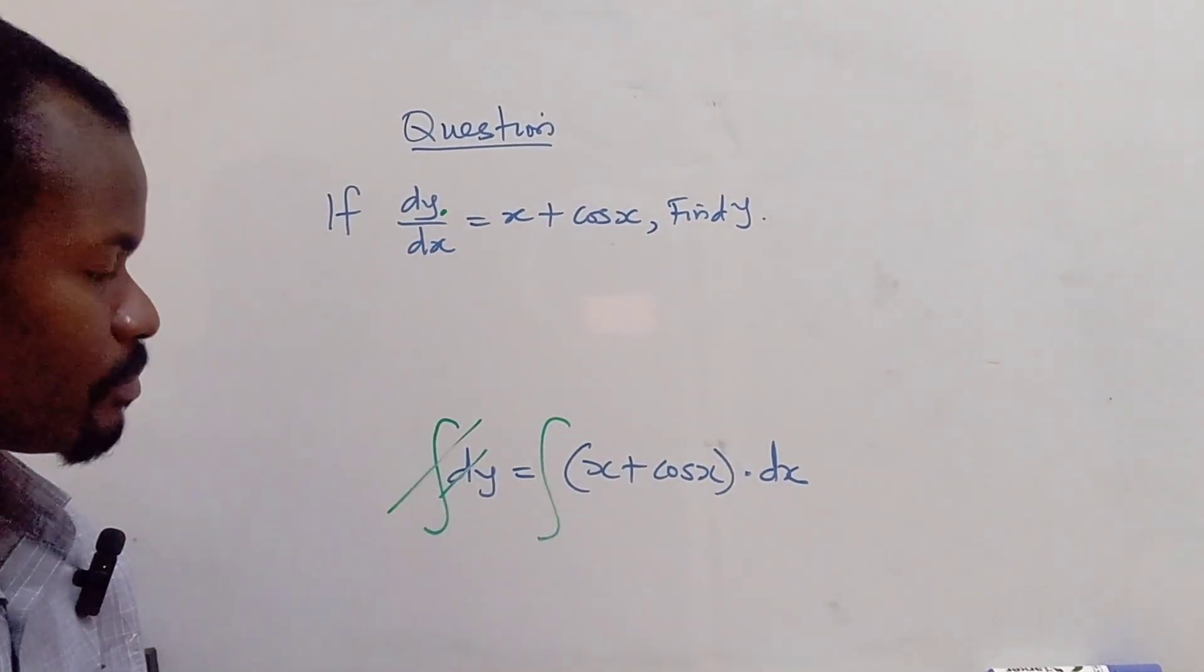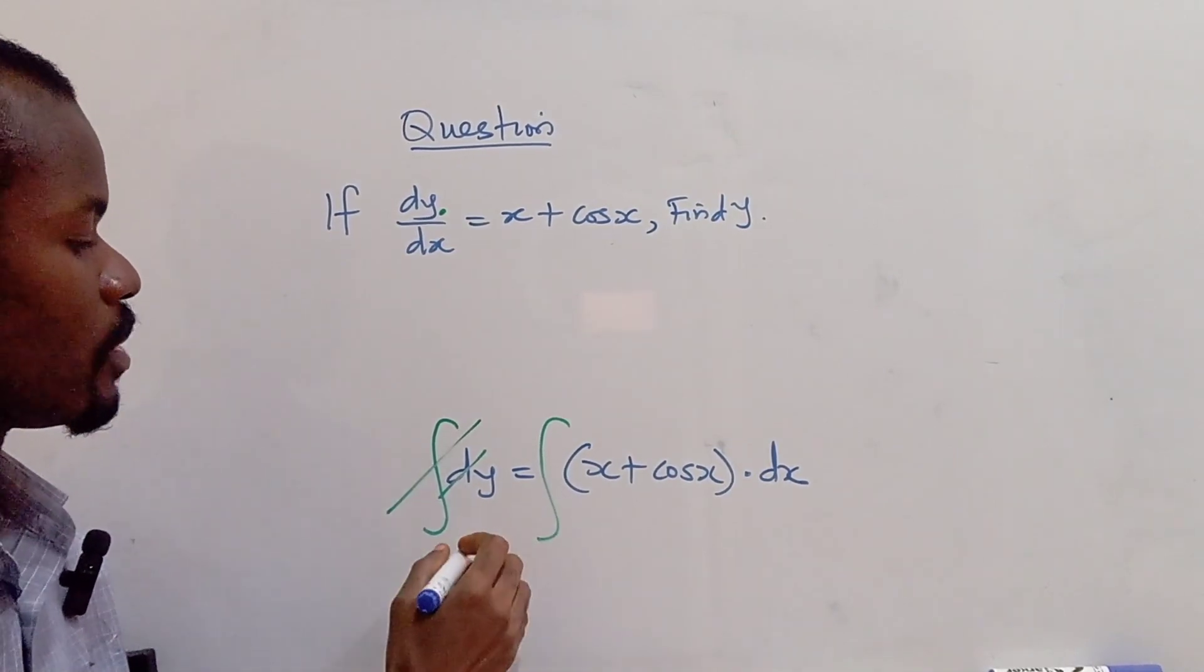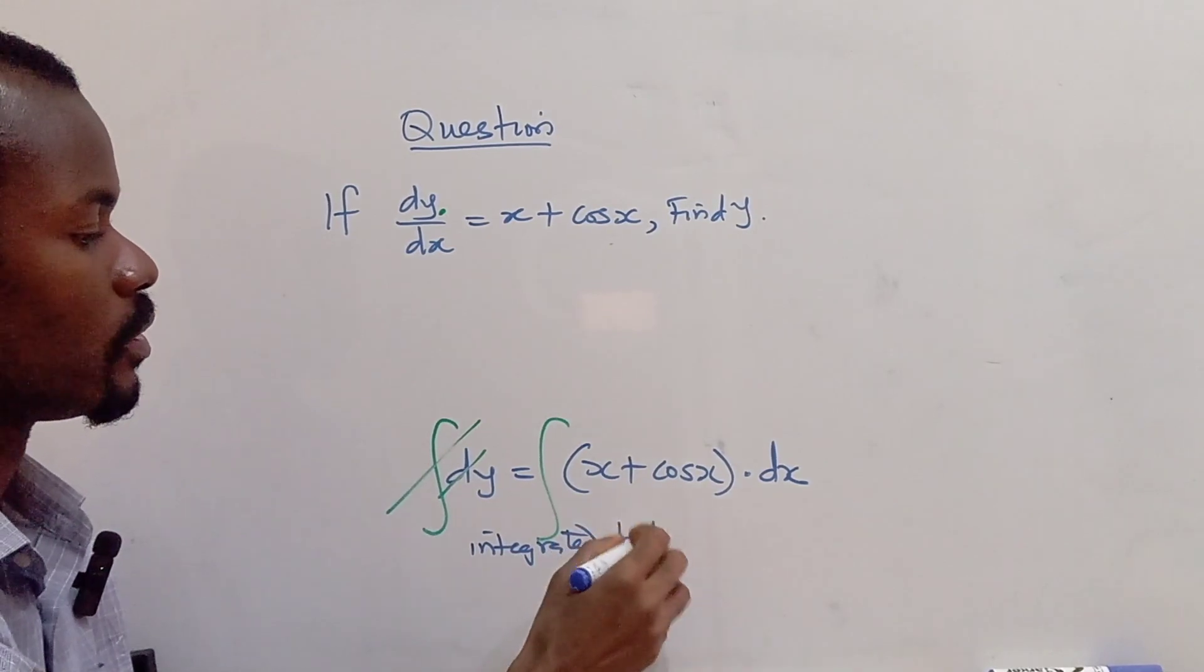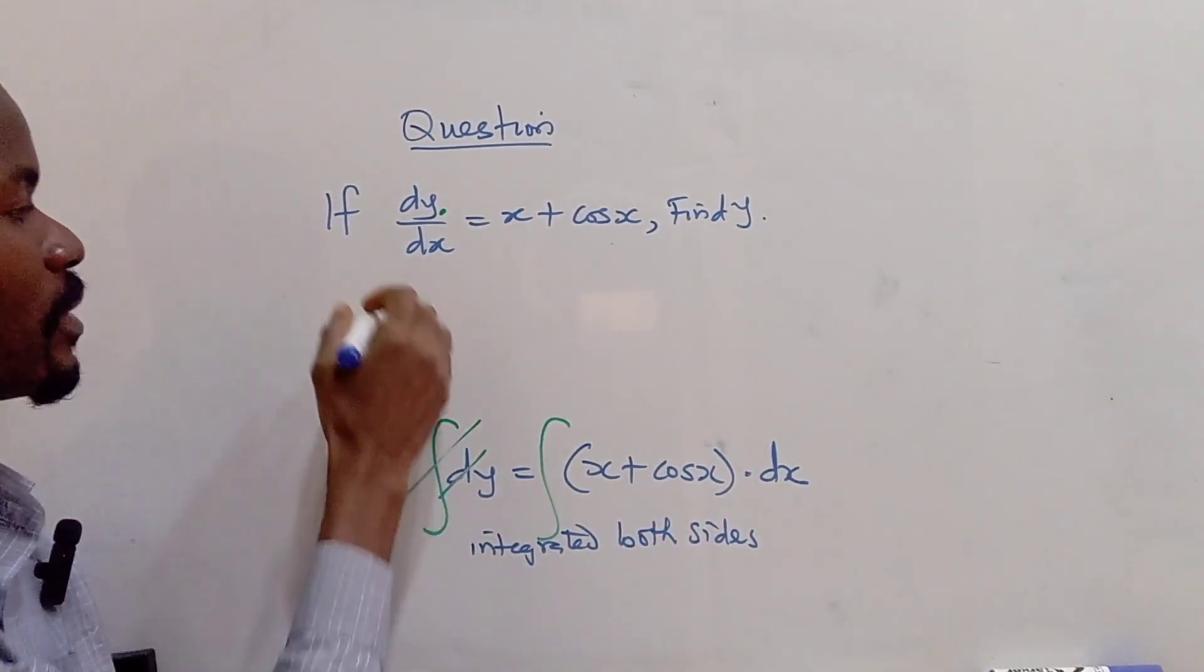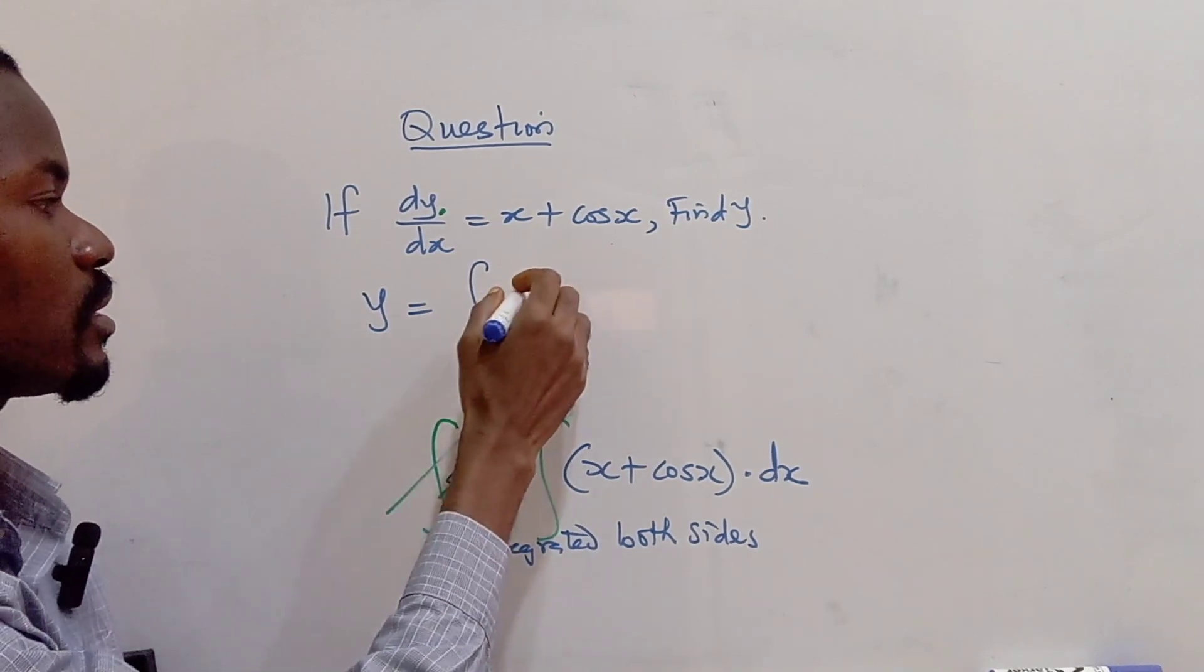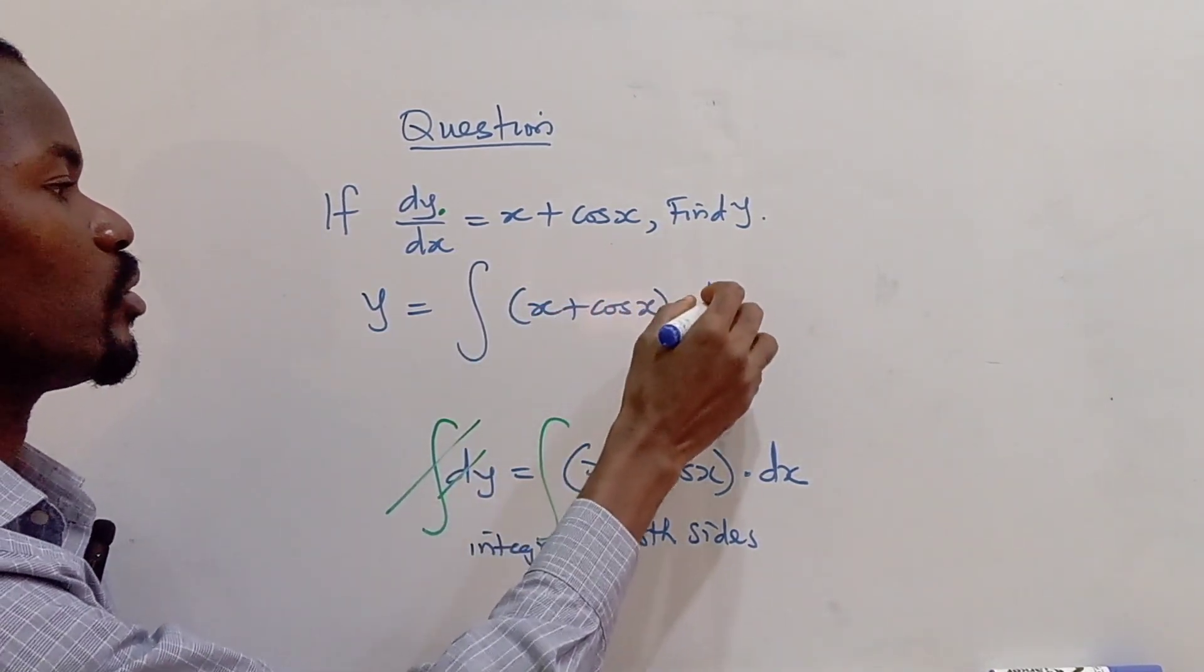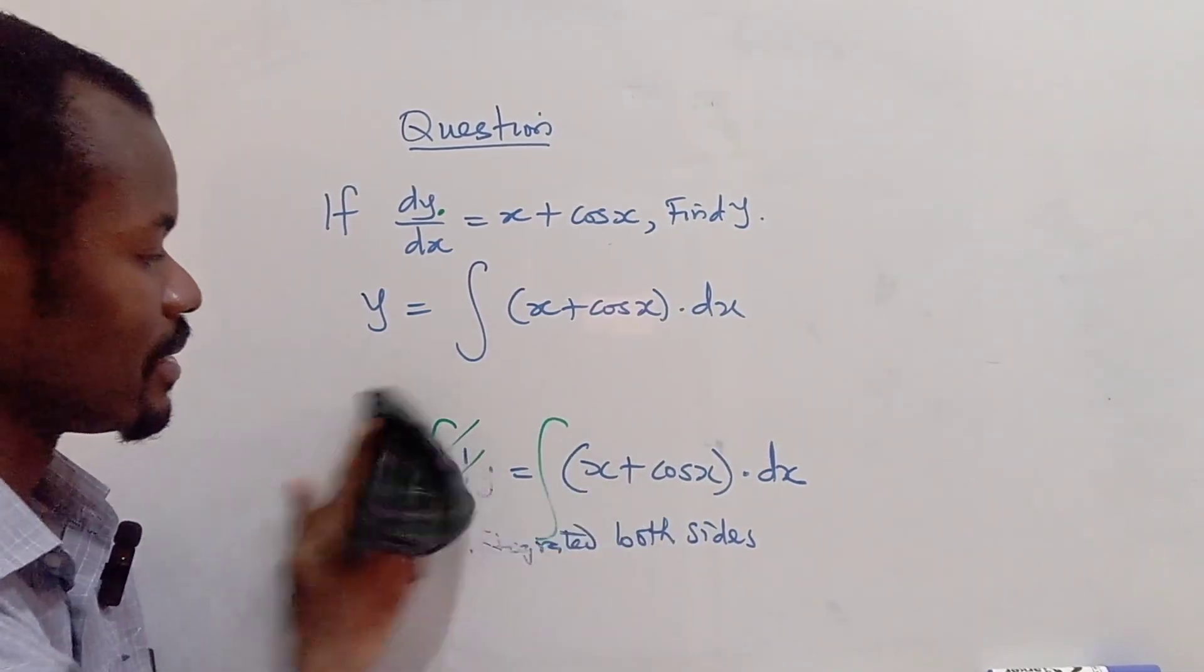So by simply integrating both sides, remember we integrated both sides. dy becomes just y. So y now would be the integration of x plus cos x, with respect to x.